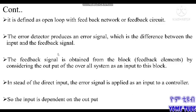The error detector produces an error signal. In the set point input, the output is a minor difference. The error signal is the difference between the input and the feedback signal. The feedback signal is a measure of physical parameters.